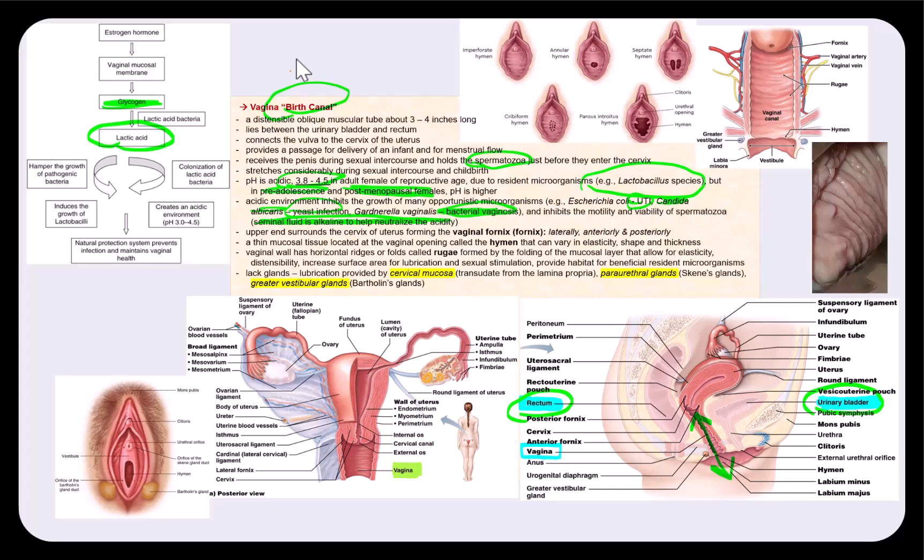It turns out in pre-adolescent females and post-menopausal females, the pH tends to be higher. Therefore, these females are more predisposed to developing urinary tract infections, or UTI, yeast infections,